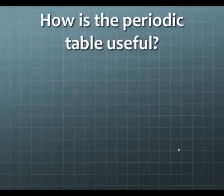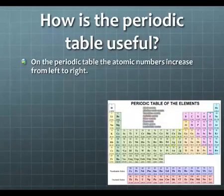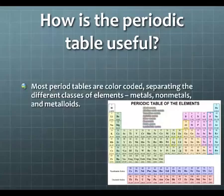So how is the periodic table useful? On the periodic table, the atomic numbers increase from left to right, as I showed you earlier. Most periodic tables are color-coded, and the color code separates different elements, different classes of elements. In future lessons, we're going to learn about each one of these classes of elements. So for example, metals, nonmetals, and metalloids, they are colored differently inside the periodic table to help separate them.